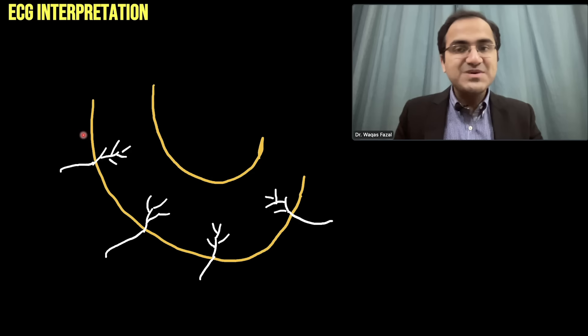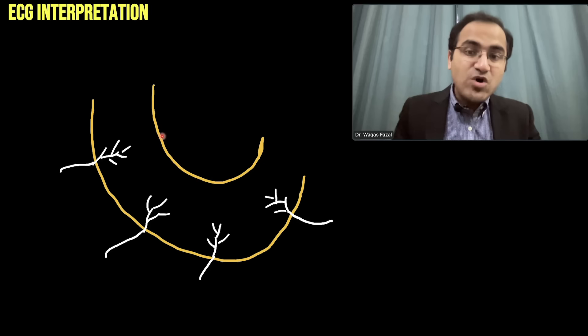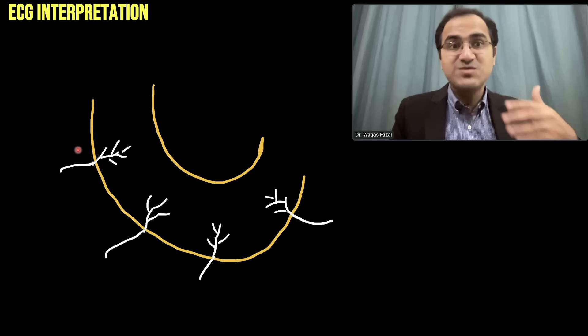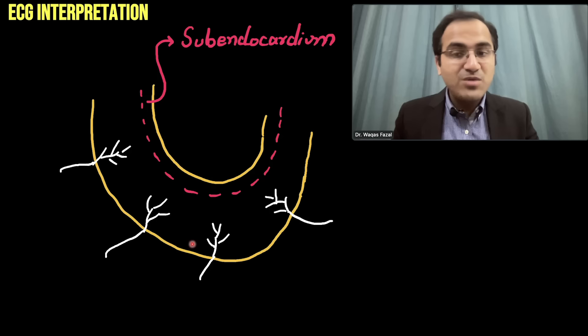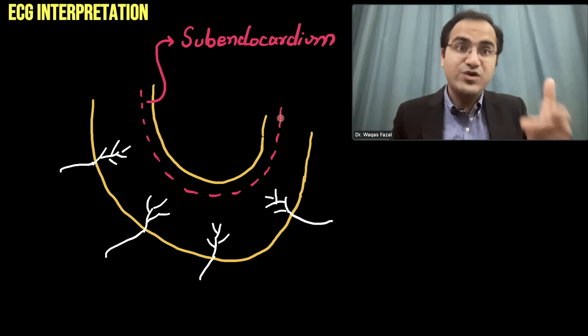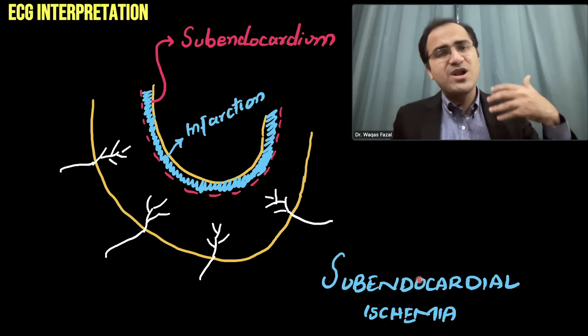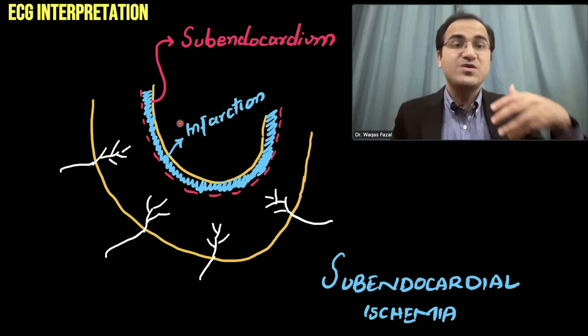The heart muscle is supplied by coronary vessels, which supply blood from outside towards the inside of the heart muscle. Whenever there is obstruction of these coronary vessels, the initial area affected will be the innermost area — the subendocardium — because it receives lesser blood supply compared to the outer area. This is called subendocardial ischemia.